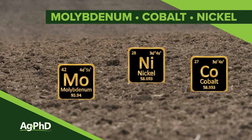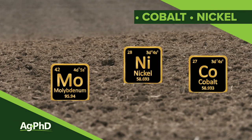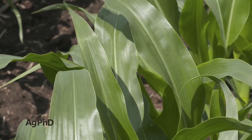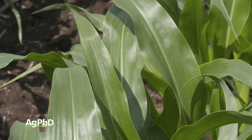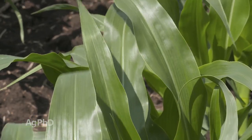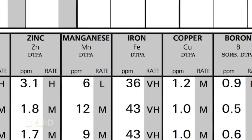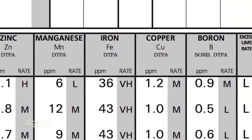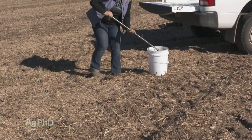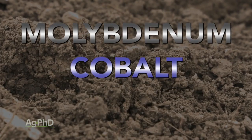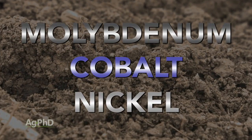Over the last couple of months we've been talking about a lot of different nutrients that are super important in plants — everything from the major nutrients, N, P, and K, all the way down to micronutrients including things you've probably heard of like zinc, boron, copper, manganese, and iron. Today we want to talk about three nutrients you've hardly ever heard of before, may never have fertilized with, but we want to discuss their importance. They are molybdenum, cobalt, and nickel. Let's start with molybdenum.